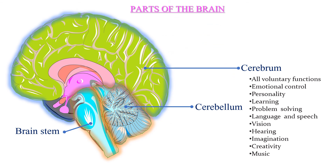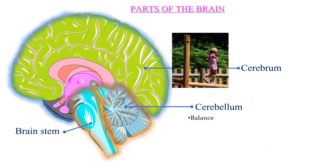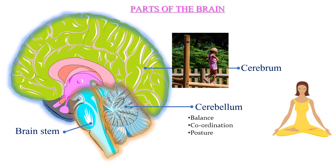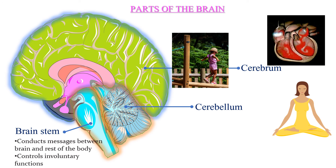The cerebellum deals with balancing, coordination between different parts of the body, and posture. The brain stem deals with conducting messages between the brain and the rest of the body, and it also controls all involuntary functions not controlled by ourselves, like heartbeat and breathing.